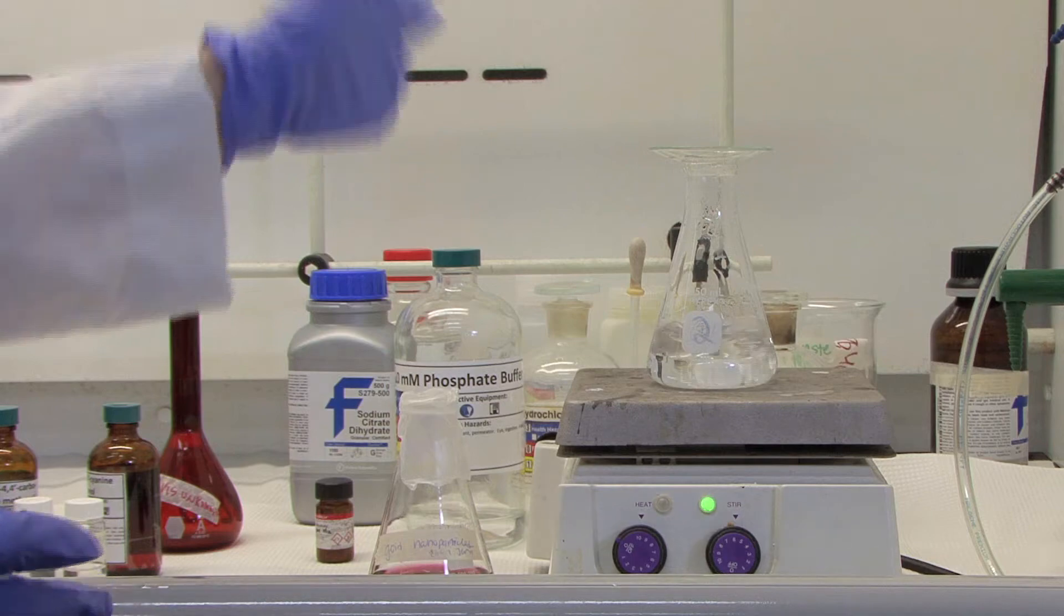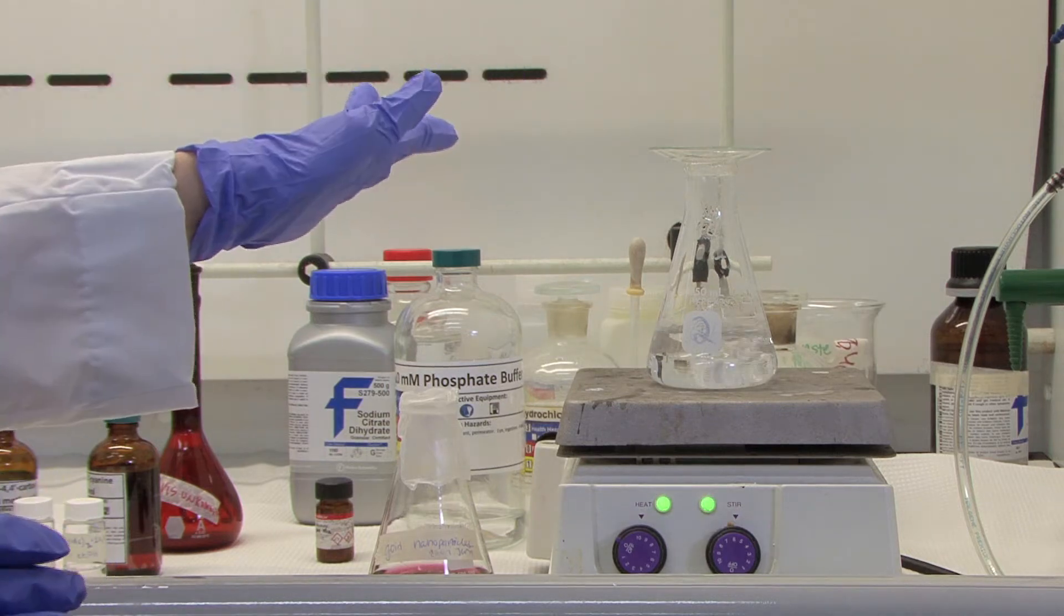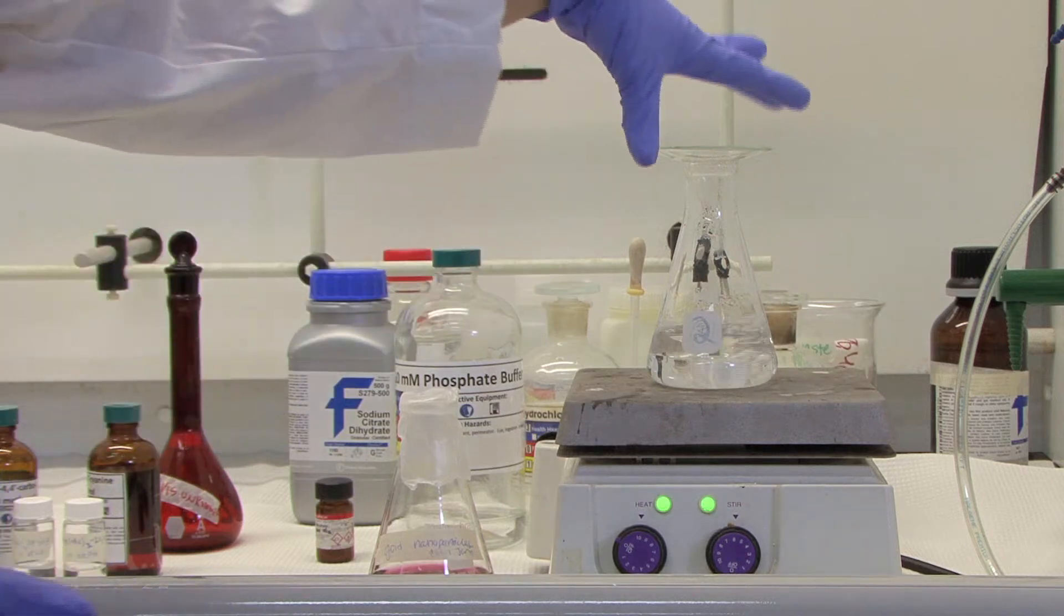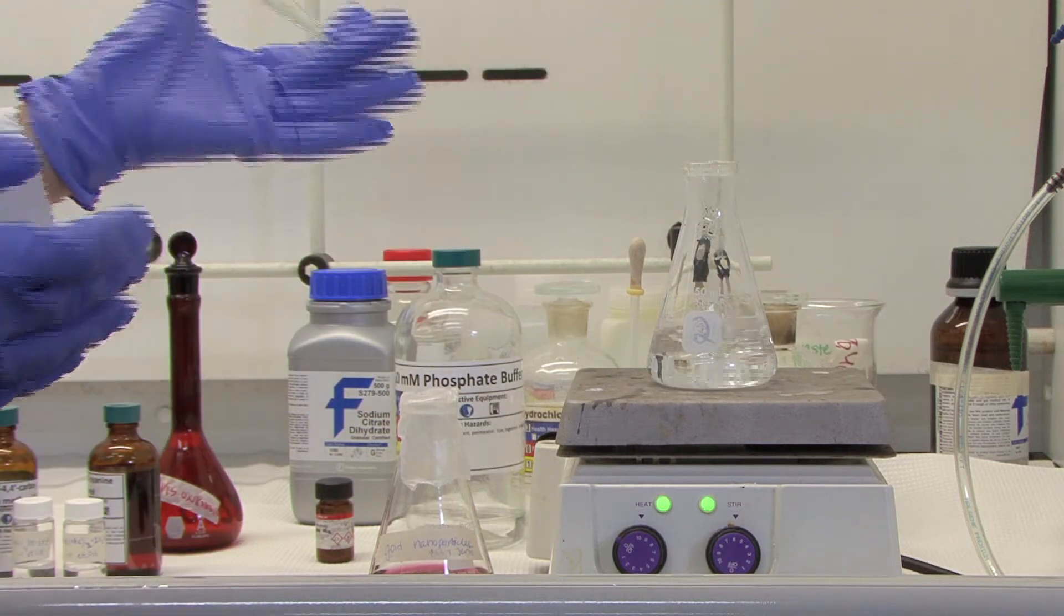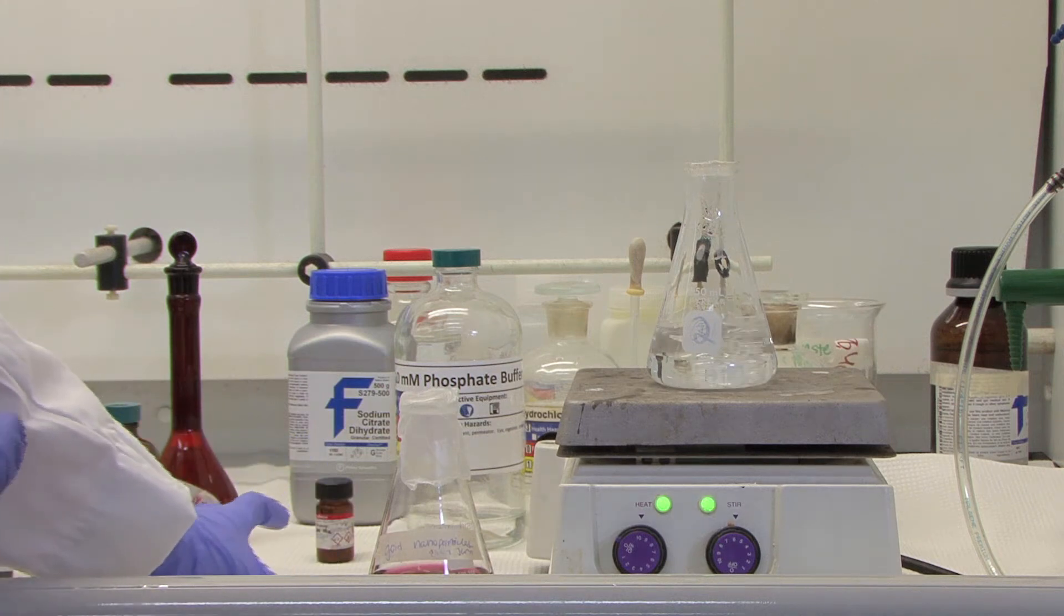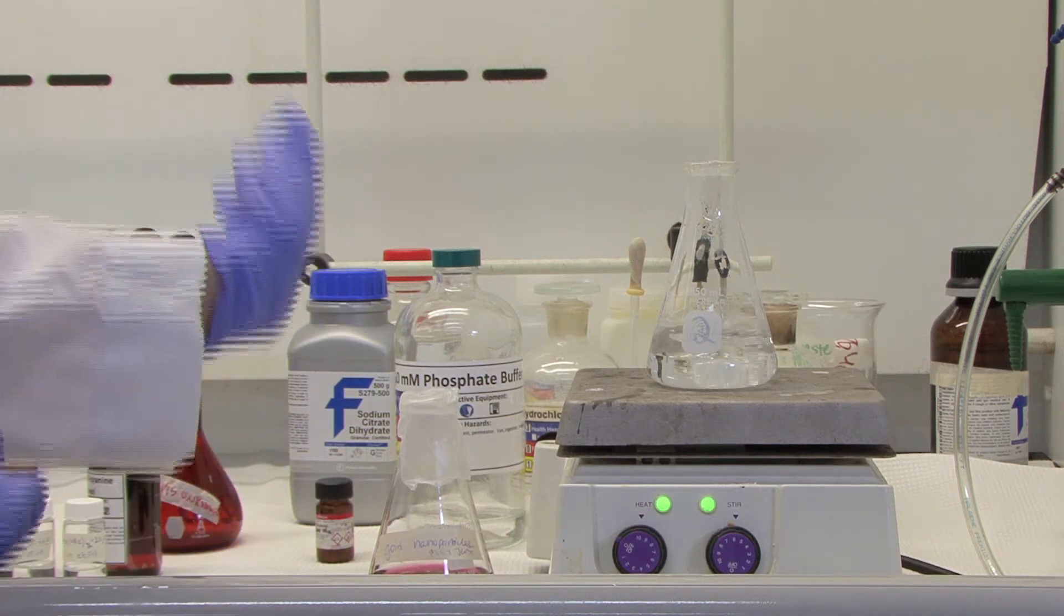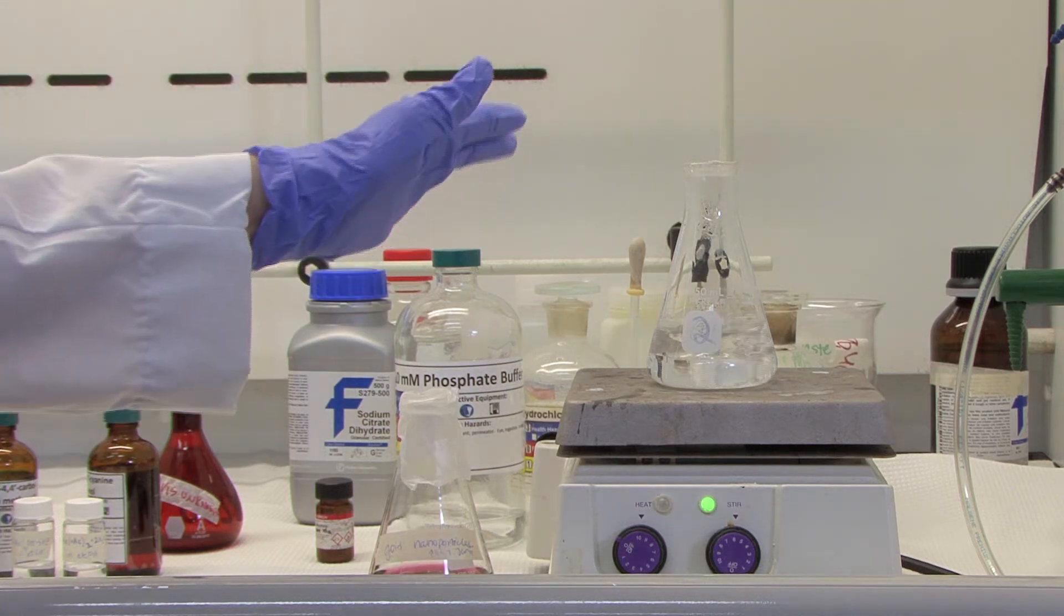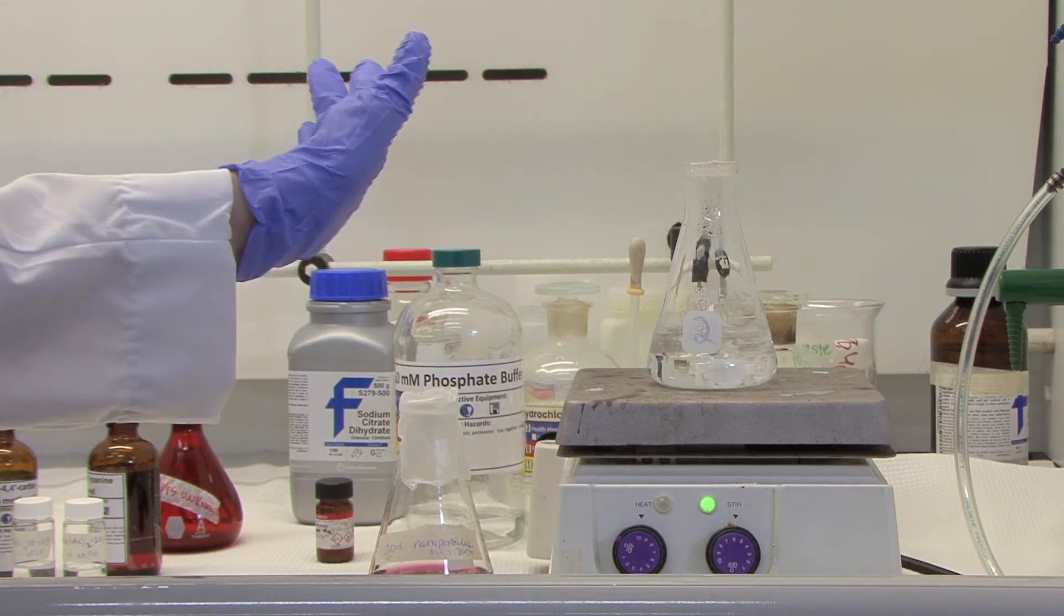In your chloro-auric acid and water solution, you want to make sure that it's at a rolling boil like shown here, and that it is not just boiling around the stir rod. Also, it is important to make sure you add all of your sodium citrate solution at one time when your solution is boiling. Otherwise, your gold nanoparticles will not be synthesized properly.